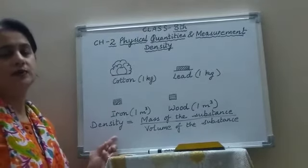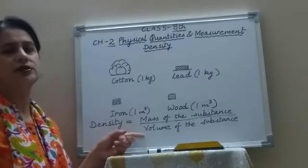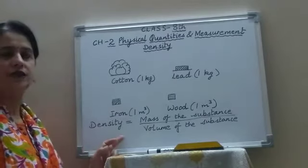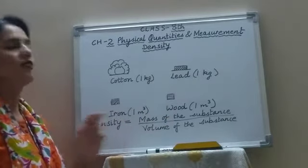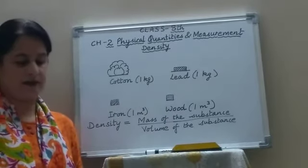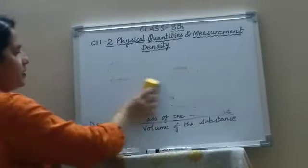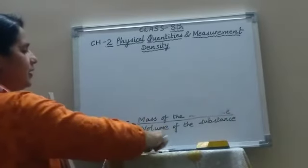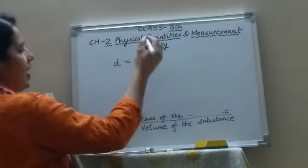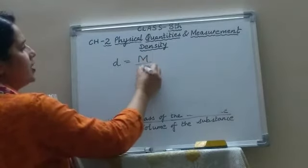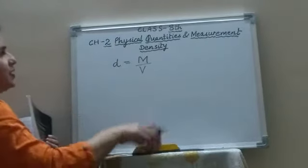So the density of a substance is defined as mass per unit volume of the substance. The formula for density is mass of the substance divided by volume of the substance. In general, if we represent density by the symbol D, mass by the symbol M, and volume by the symbol V, then D equals M upon V.